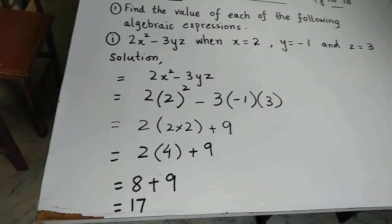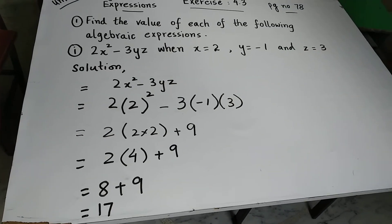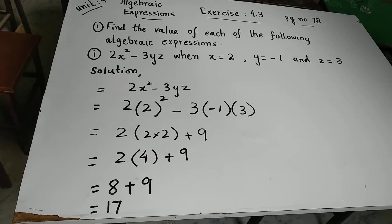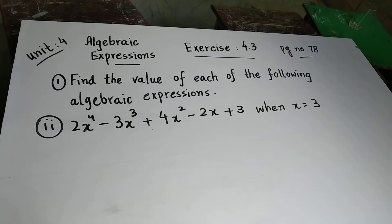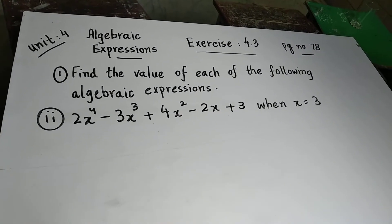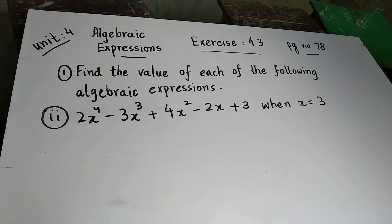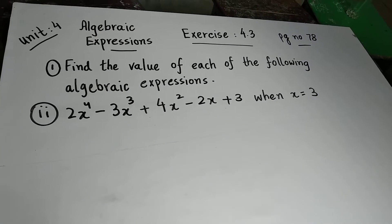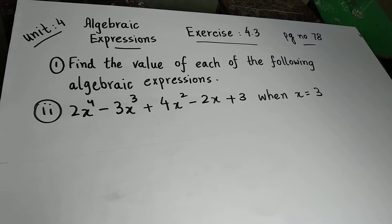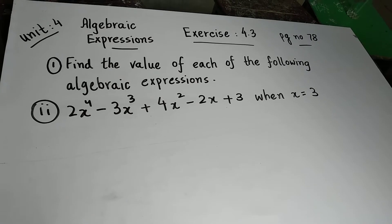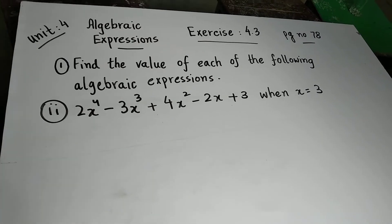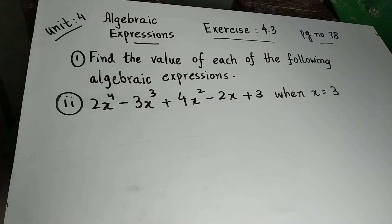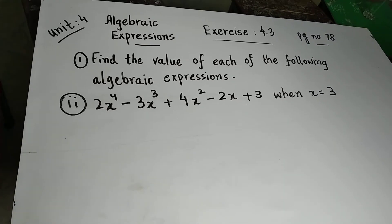You have solved the total question and found the value of the expression. Question 1 has been completed. Now for the second question: 2x⁴ minus 3x³ plus 4x² minus 2x plus 3. This is an algebraic expression where the value of x is given as 3. Wherever you see x, replace it with 3.